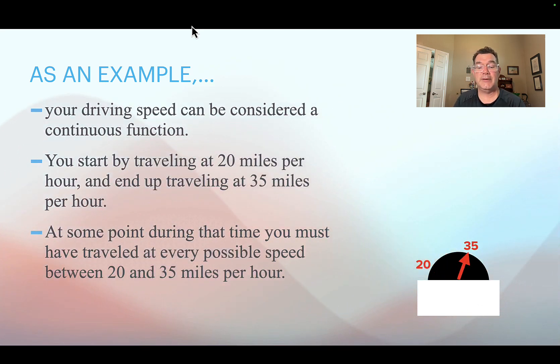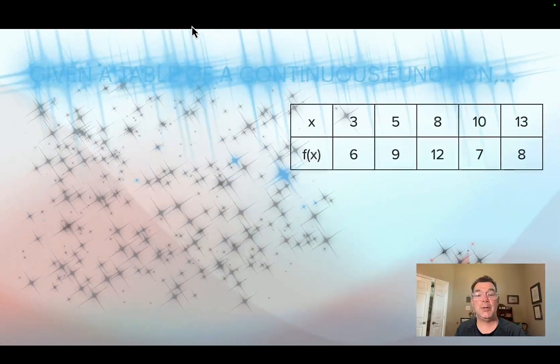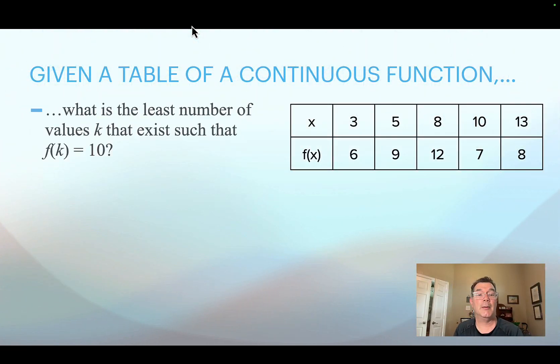If you're given, instead of a practical example, let's say you're given a table and you're asked if these are the x values and y values on a continuous function, what is the least number of values k so that f(k) equals 10? Well, what you have to do is you have to look at every sub-interval that's in the table. If I look at the first one between x equals 3 and x equals 5, the y values start at 6 and end at 9, which means that the y values are going to hit every y-value in between.